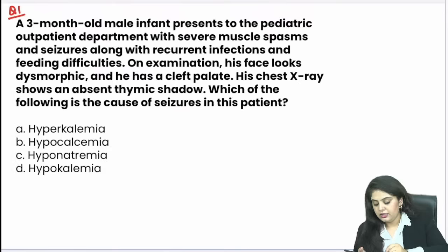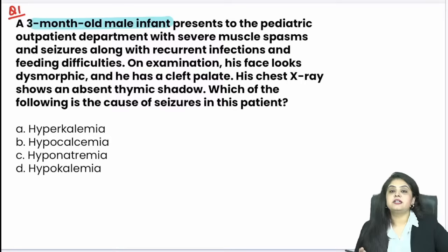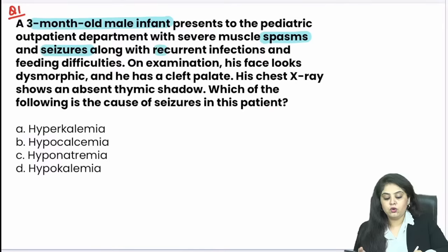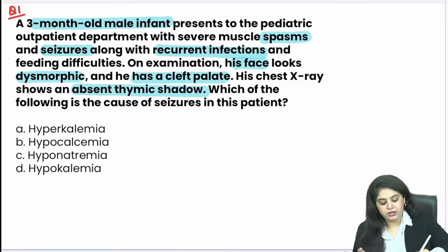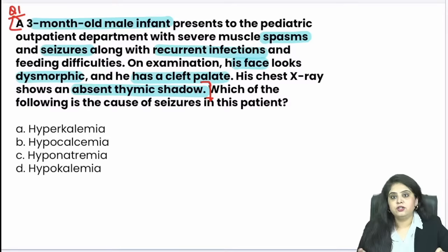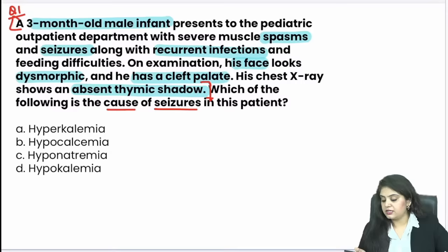We have a 3-month-old male infant presenting to the paediatric outpatient department with severe muscle spasms and seizures, along with recurrent infections and feeding difficulties. On examination, the face looks dysmorphic and there is a cleft palate. On chest X-ray, there is an absent thymic shadow. I am sure you have made your diagnosis — this information was enough — but they have not asked you the diagnosis. They have asked which of the following is the cause of the seizures in this patient.